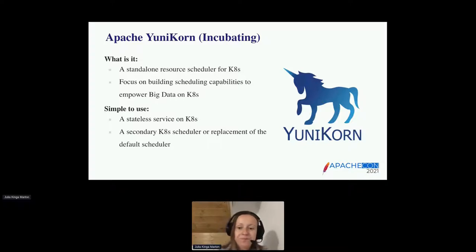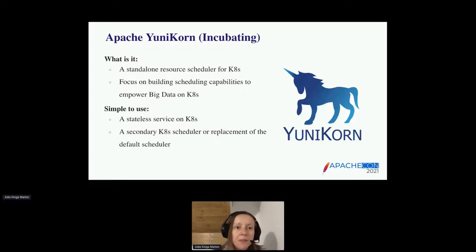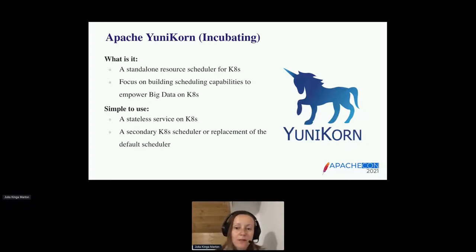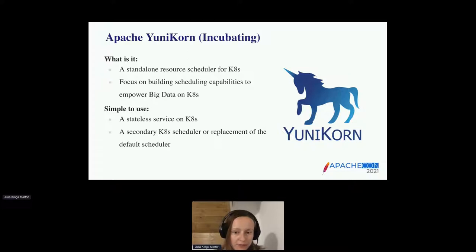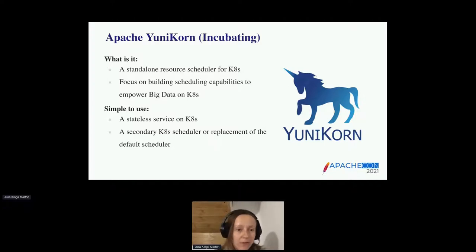Yunikorn is quite simple to use. It is deployed as a stateless service in a Kubernetes system. We have the core and the shim side deployed together, but in the future we want to make it possible to run multiple shims against the same core. Currently the deployment consists of two services: the scheduler itself and the admission controller. The admission controller is responsible for routing all the pods to Yunikorn and also for doing some validation. Yunikorn can run together with the default scheduler or completely replace the scheduler in the Kubernetes system, and it also works very well with the cluster autoscaler — it can handle node scale-up and scale-down.